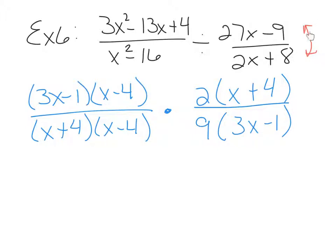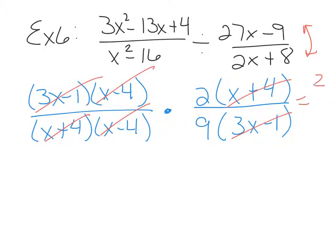Now we can cancel — vertically or diagonally. The x minus 4s cancel, 3x minus 1 cancels, and x plus 4 cancels. That leaves us with 2 over 9.